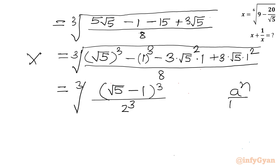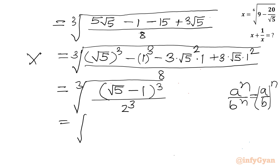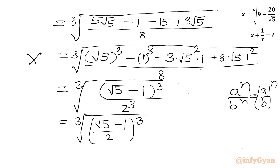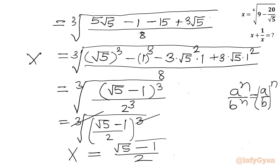Using the property a^n over b^n equals (a over b)^n, I can write this as the cube root of (√5 minus 1 over 2) whole cube. The cube root and cube cancel, so our x comes out to be (√5 minus 1) over 2. This is the value of x.